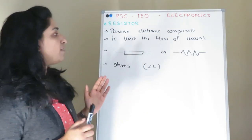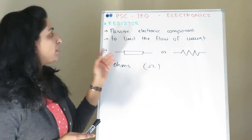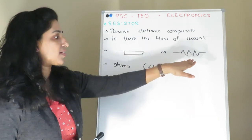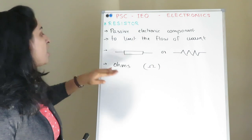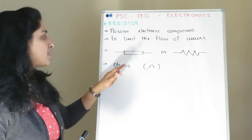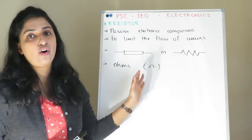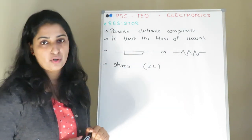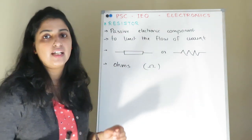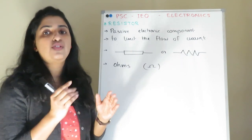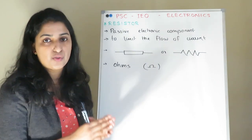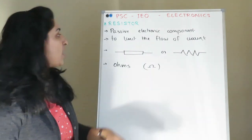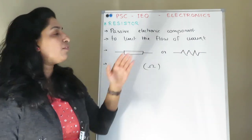A resistor is a passive electronic component. It is used to limit the flow of electric current, and it can be represented as a rectangular shape or zigzag line representation. It is measured in ohms, represented by the symbol omega. Resistors are passive electronic components because they are not a source of power.